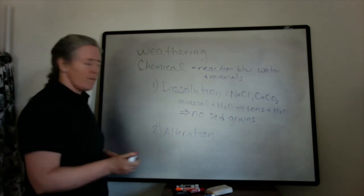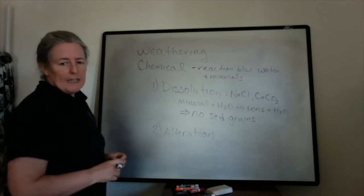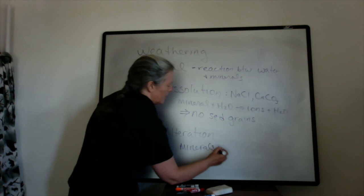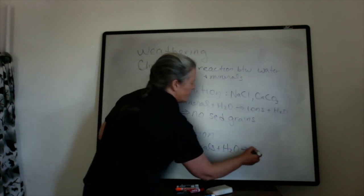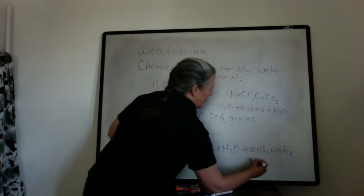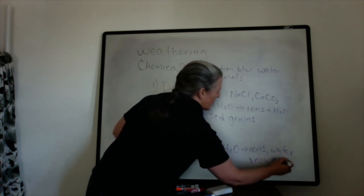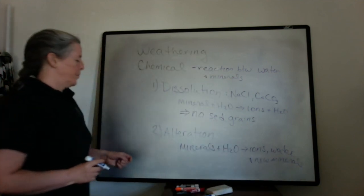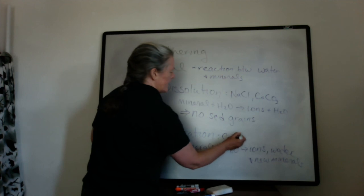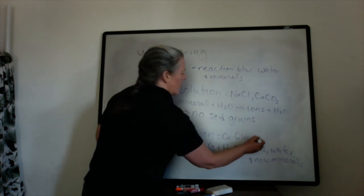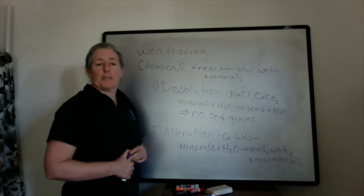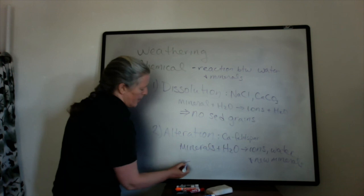So alteration is a process where you basically have minerals plus water and it goes to ions, water, and new minerals. So an example of that would be, say, a feldspar, plagioclase, which is a calcium feldspar. When it reacts with water, it tends to produce calcium ions and clay minerals. And so the alteration produces new minerals.